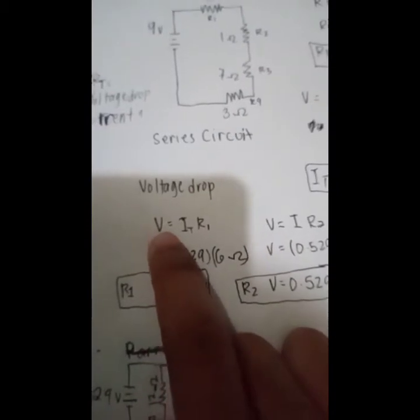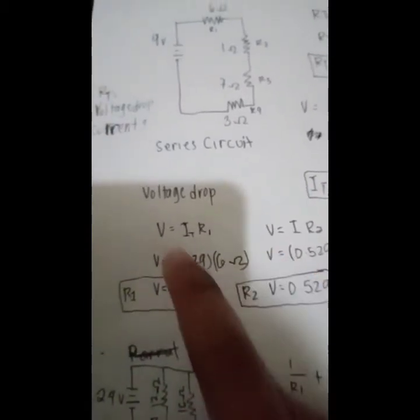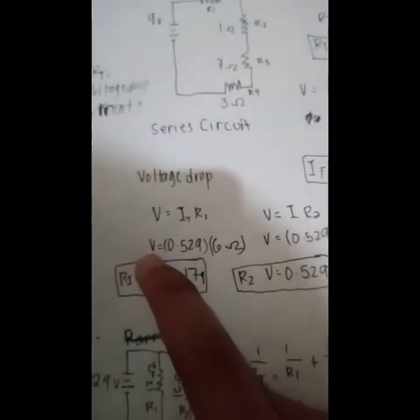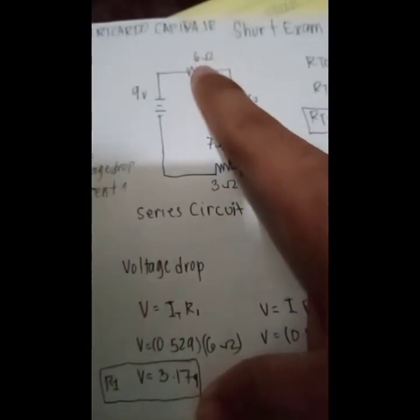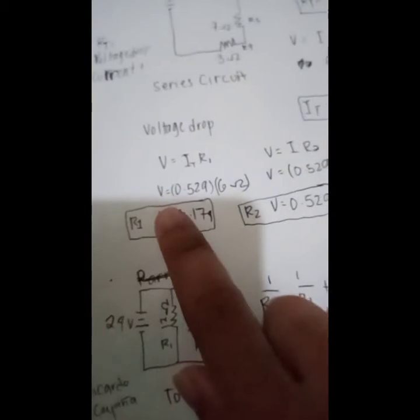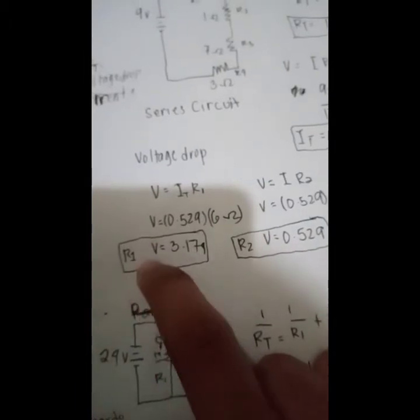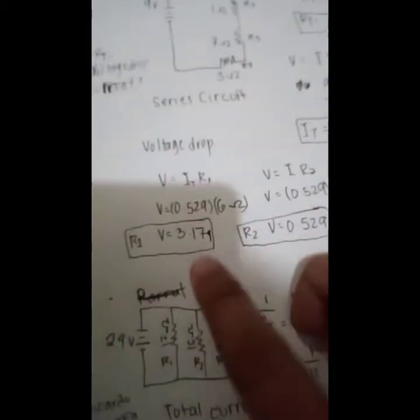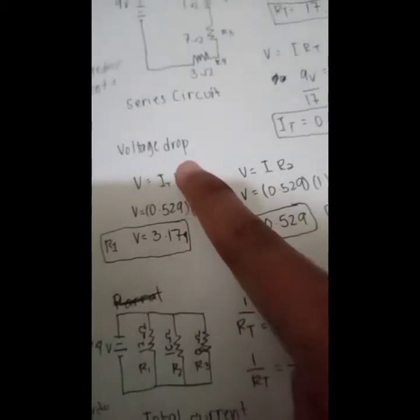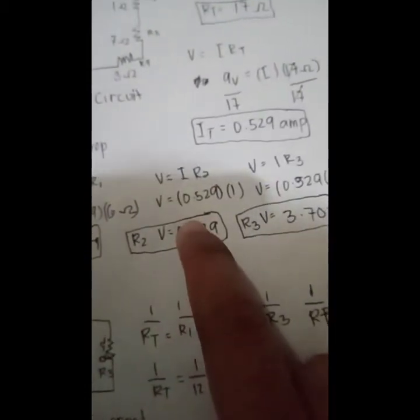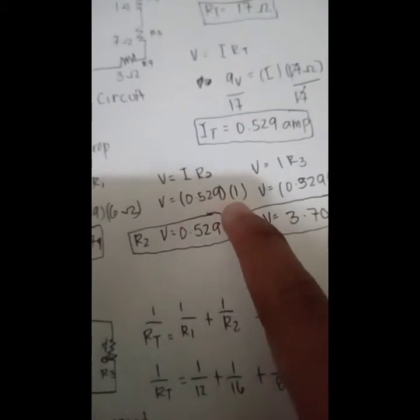We're going to find the voltage drop. The formula for voltage drop is V = IR, Ohm's law. We will substitute the current total and the given resistance for resistor 1, which is 6 ohms. The current total times R1 gives us a voltage drop of 3.174 volts on resistor 1.